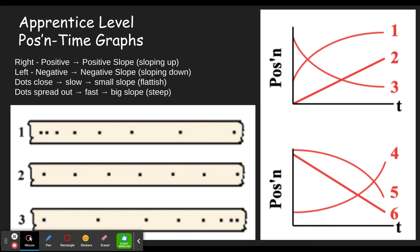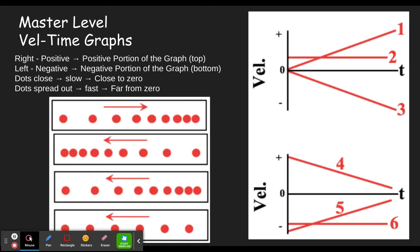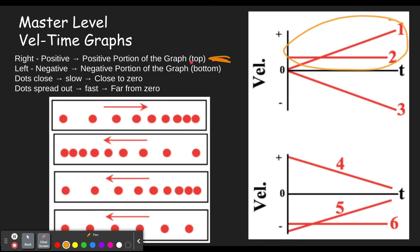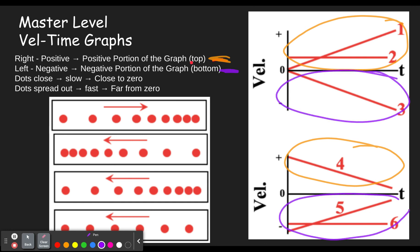The master level now deals with velocity-time graphs. Things that are moving right are positive, and therefore in the positive portion of the graph — that would be graphs one, two, and four. Things that are going negative — moving left — would be graphs three, five, and six. When dots are close together and going slow, that represents values close to zero on the velocity-time graph. When things are going fast with dots spread out, that represents a big positive or big negative — far from zero.